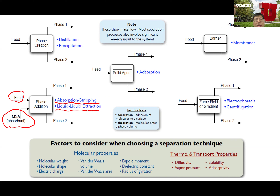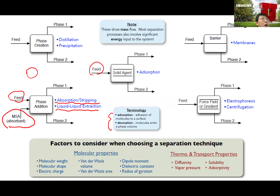In adsorption, you use a solid agent called an adsorbent to selectively absorb some component from your feed mixture. The difference between absorption and adsorption is: in absorption, you use a solid absorbent — a particle — and one of the compounds will go into the bulk of your particle. Whereas in adsorption, you also use a solid agent called an adsorbent, but one of the components will be adsorbed to the surface of your particle, not the bulk.